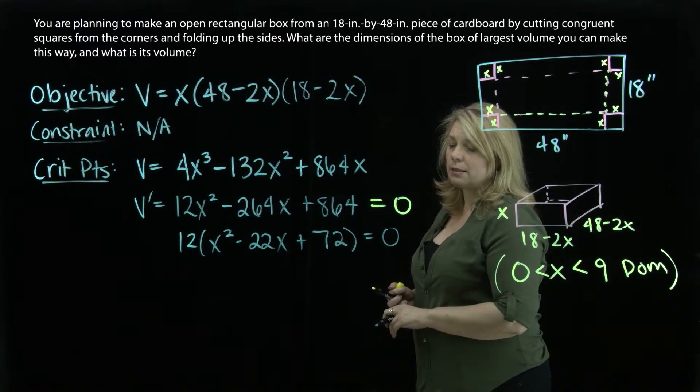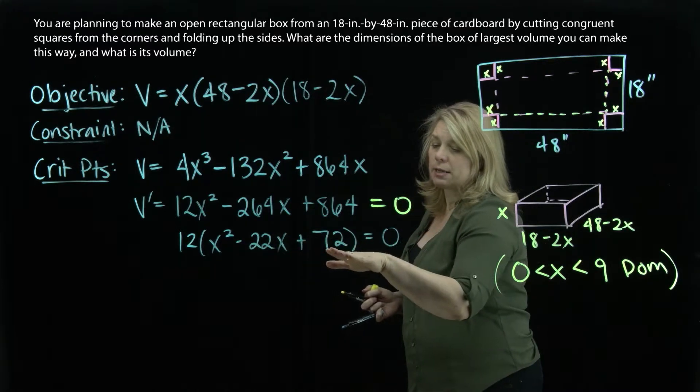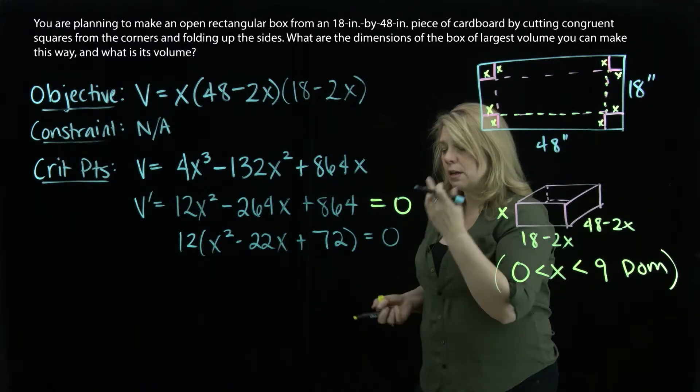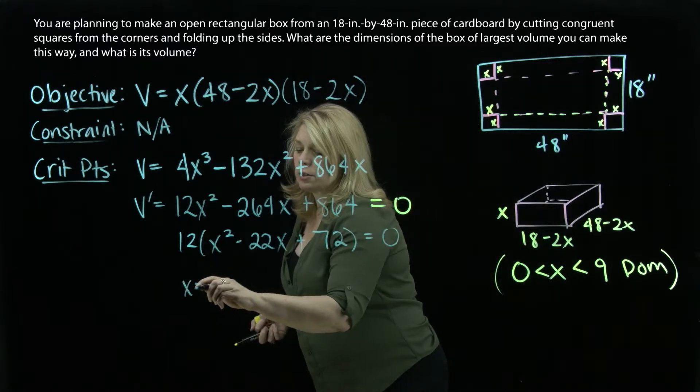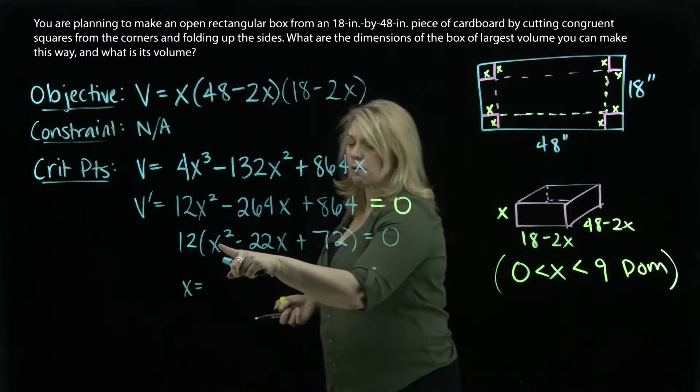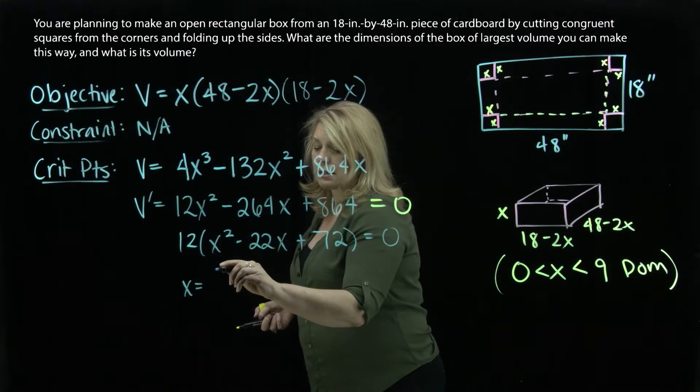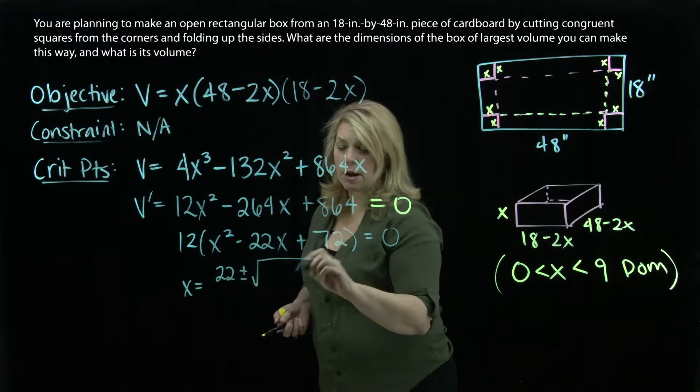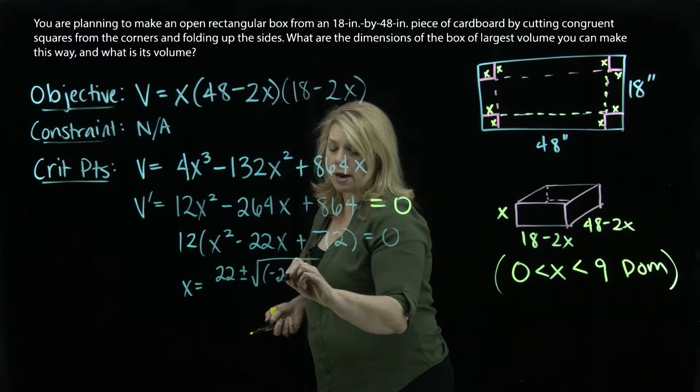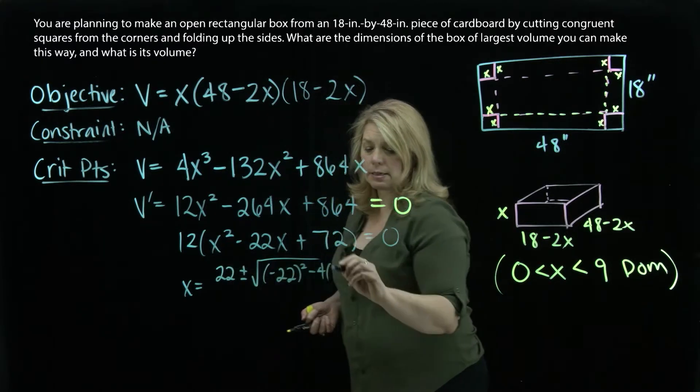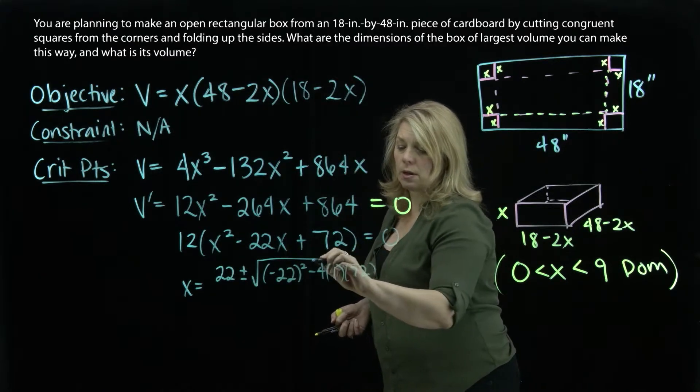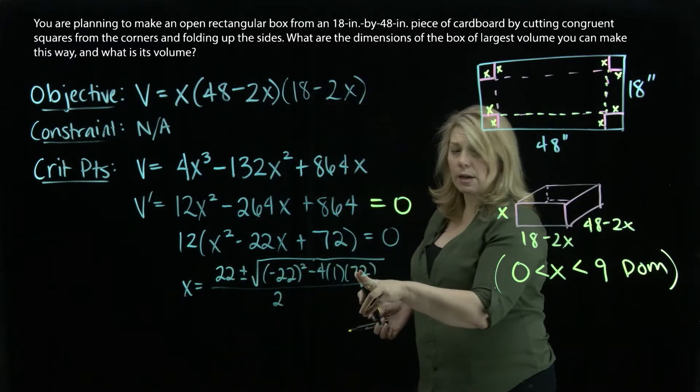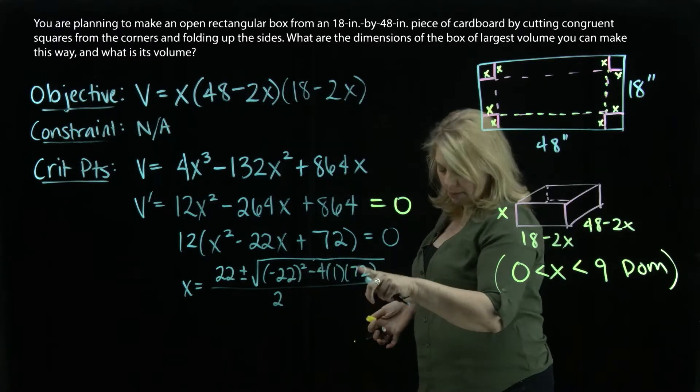This quadratic equation that's left here, x squared minus 22x plus 72, when I set that part equal to 0, that also factors, although it's maybe not so obvious. So maybe you use quadratic formula to do that. When I set this part equal to 0, and then I use quadratic formula, I'll get x equals positive 22 for the negative b, plus or minus the square root of negative 22 squared, minus 4 times 1 times 72, all inside the radical, all over 2 times 1.